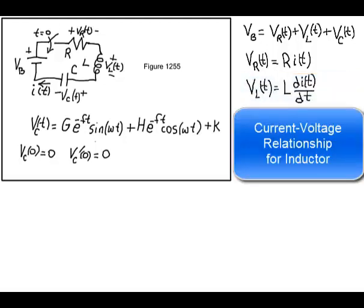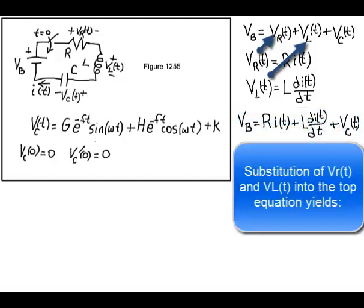And this is the current voltage relationship for an inductor. The inductance times the rate of change of current through the inductor is the inductor voltage. Substituting VR and VL into the top equation yields this form.